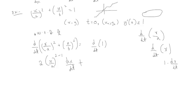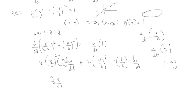For the second term (y/b)²: similarly, the power comes down, we write (y/b) to the power 1, and differentiate the inside. That gives us 1/b outside, and then dy/dt. Including the missed detail from the first term — it's 1/a — after simplification we get: 2x/a² · dx/dt + 2y/b² · dy/dt = 0.